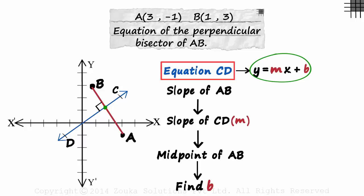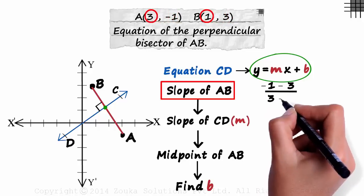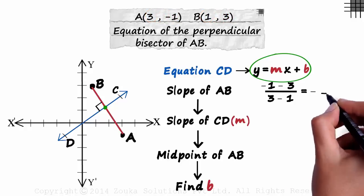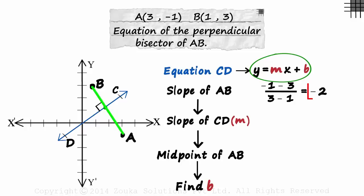Okay, so what is the slope of AB? It will be minus 1 minus 3 over 3 minus 1. Difference of Y coordinates over the difference of X coordinates. This gives us minus 2. The slope of AB is minus 2.